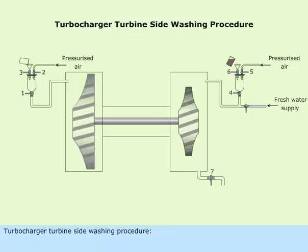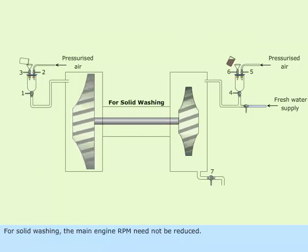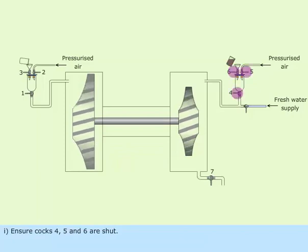Turbocharger turbine side washing procedure. For solid washing, the main engine RPM need not be reduced. Step 1: Ensure cocks 4, 5, and 6 are shut.